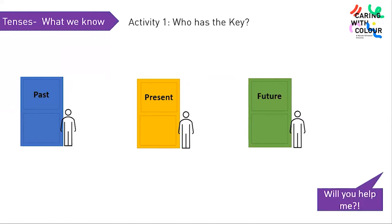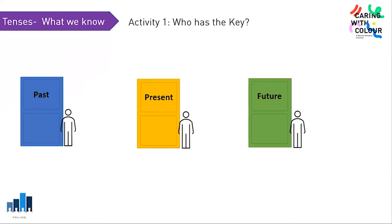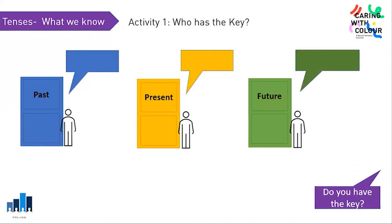'Will you help me?' 'I had helped you.' 'I am helping you.' 'I will help you.' They surely talk in a peculiar manner. Let me ask them who has the key: 'Do you have the key?' But I cannot see their answers. Can you all imagine how they might have answered? If you've imagined their answers, you already know who has the key.